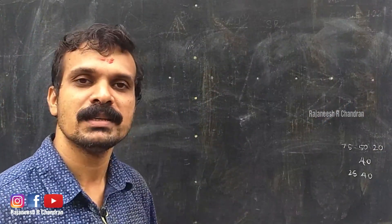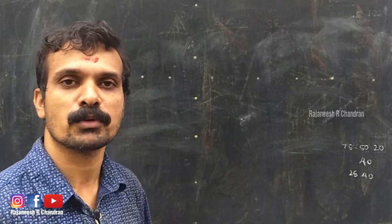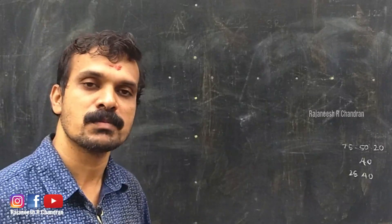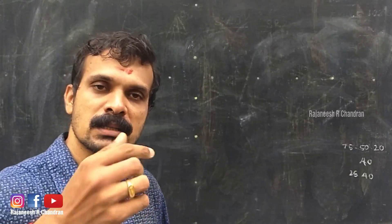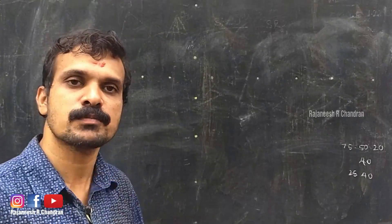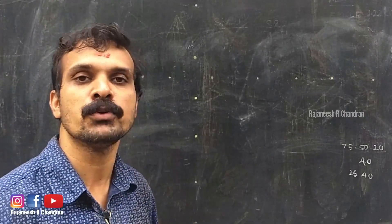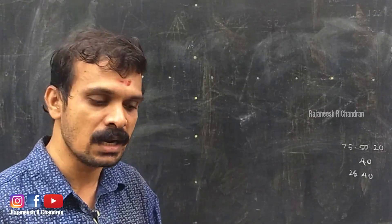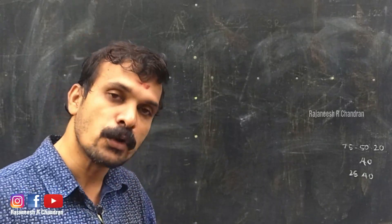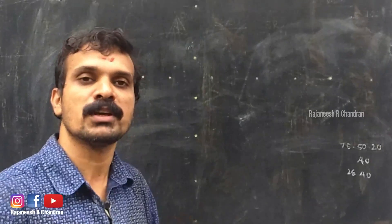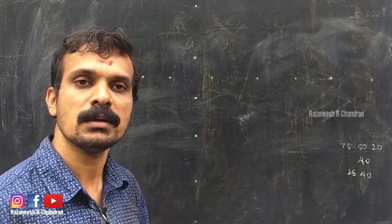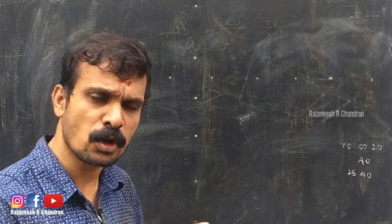The first step will be the construction of the orthographic projection. In problems related to solids, the view where the base is visible should be drawn first. In this problem, in the top view you can see the base — there you can see a rectangle, on top of the rectangle there will be the square corresponding to the cube, and on top of that there is a square corresponding to the square pyramid. So we can draw the top view first.